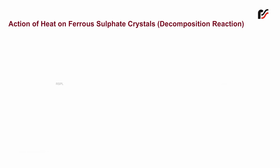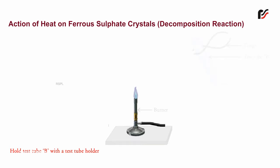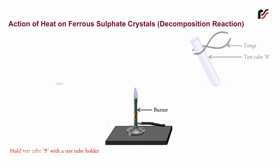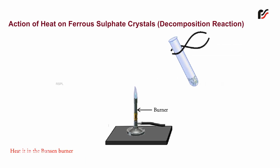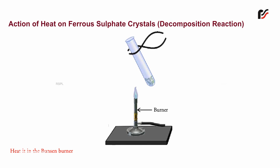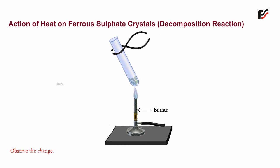Action of Heat on Ferrous Sulfate Crystals. Hold test tube B with a test tube holder, add ferrous sulfate crystals to it, heat it in the Bunsen burner, and observe the change.